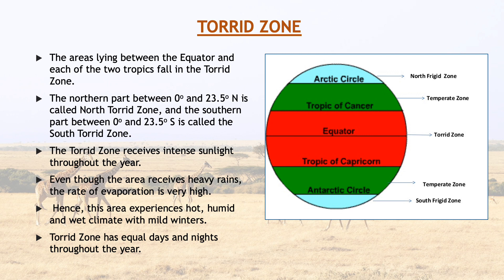Torrid zone has equal days and nights throughout the year. Torrid zone mein barish bhi bhaari maatra mein hoote hai. Aur extreme sunlight and rains ki wajay se, is zone mein humidity, wet climate aur hot weather with mild winters experience karne ko milta hai. Torrid zone mein nights and days equal length ke hoote hai.